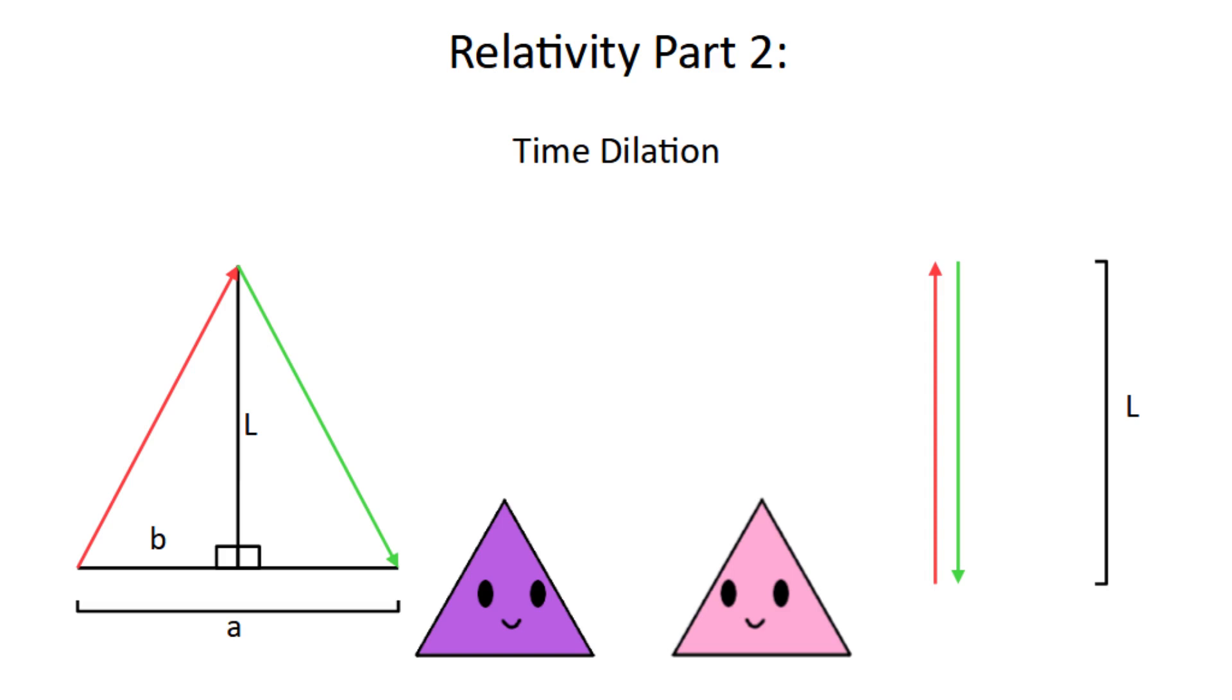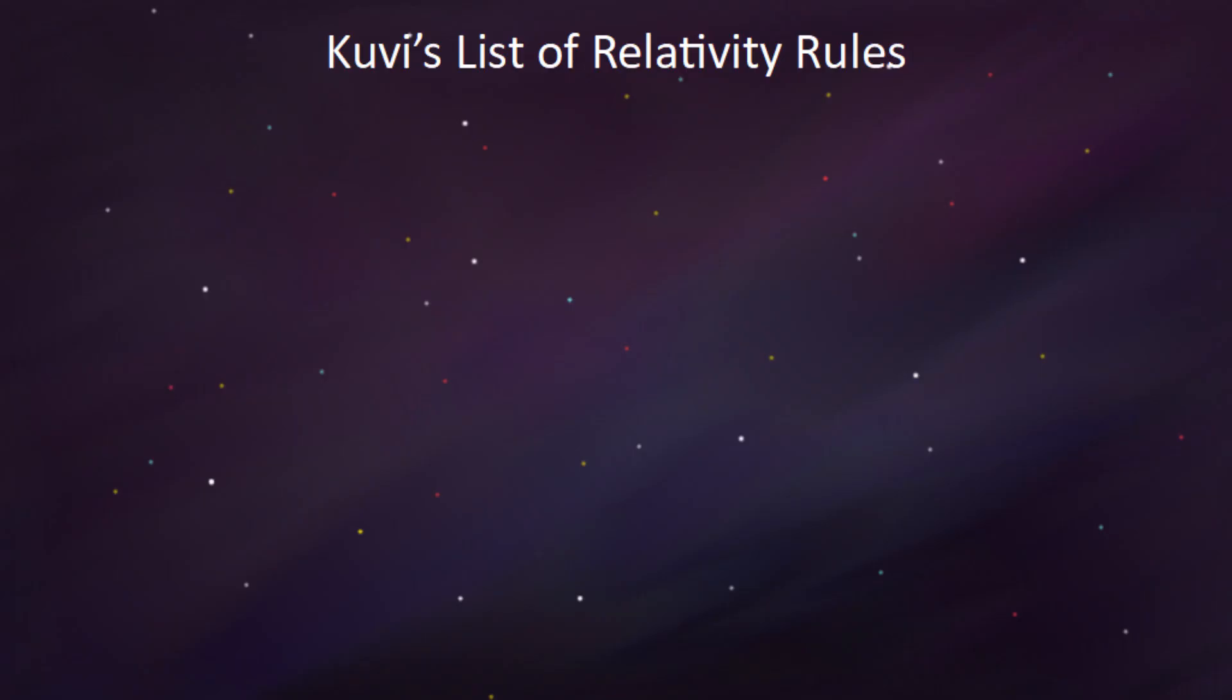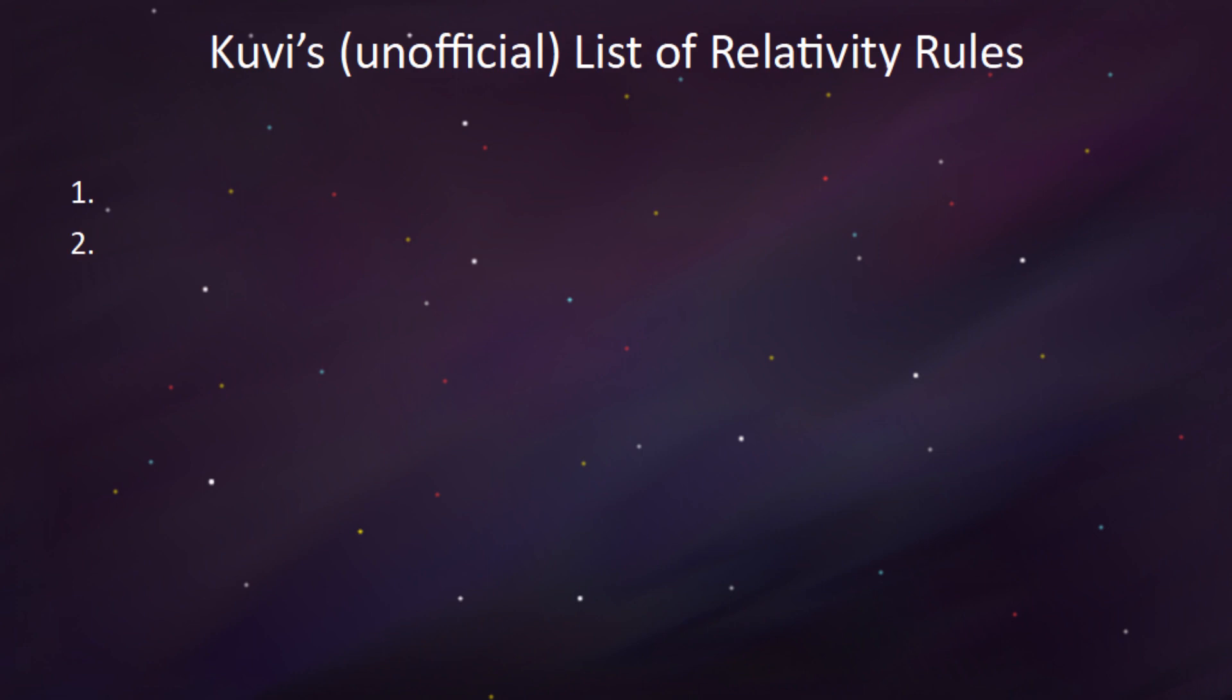In order to keep track of relativistic effects, I will keep a list of rules. This list is not official in any capacity, but I find it to be very helpful. The first two rules on this list are actually just the postulates of relativity, which were covered in the previous video.